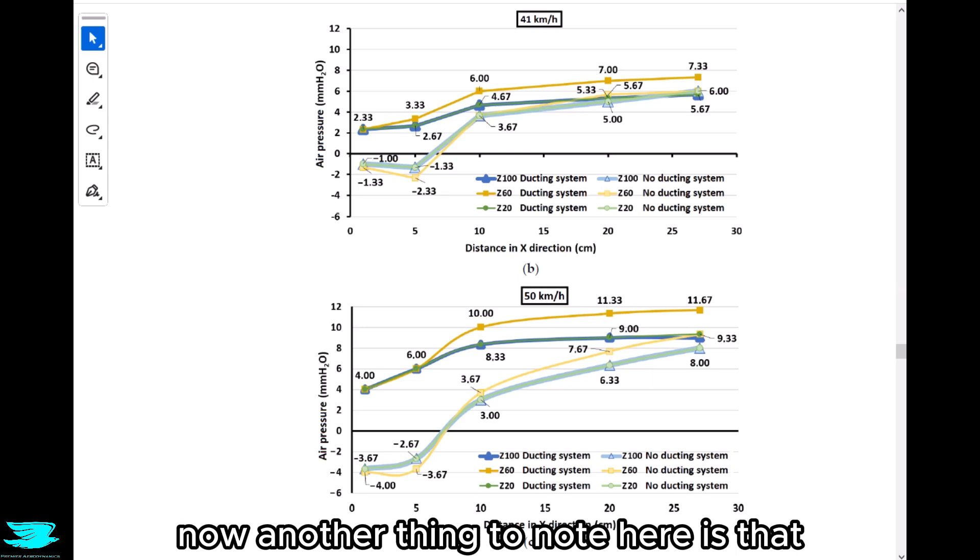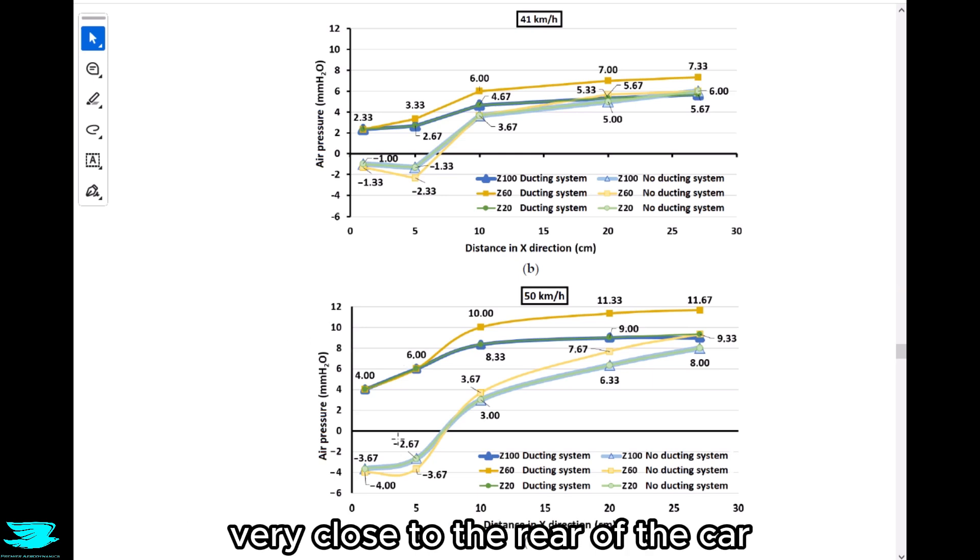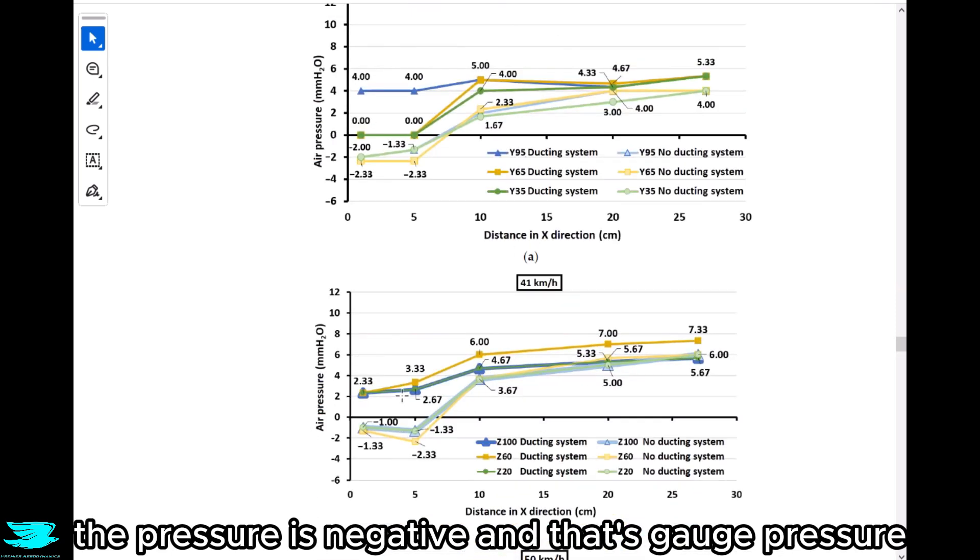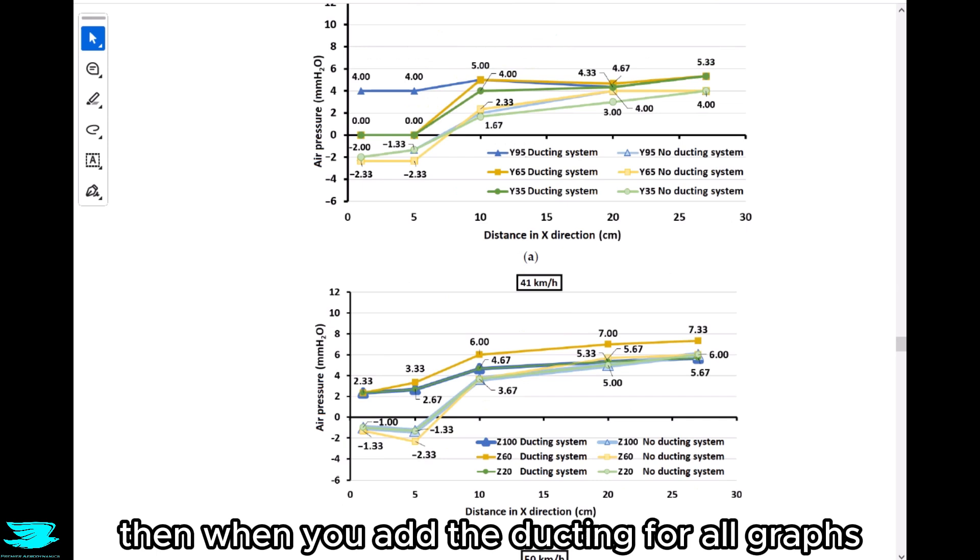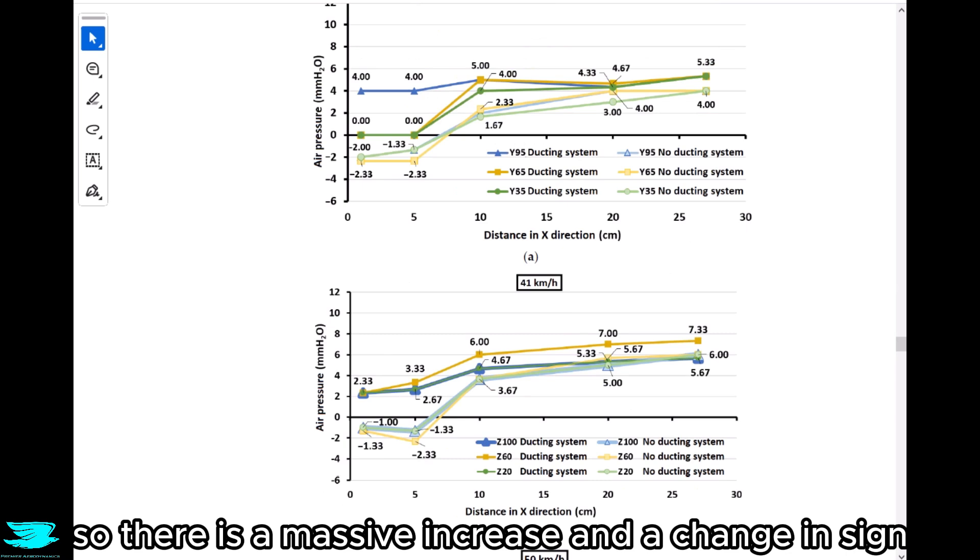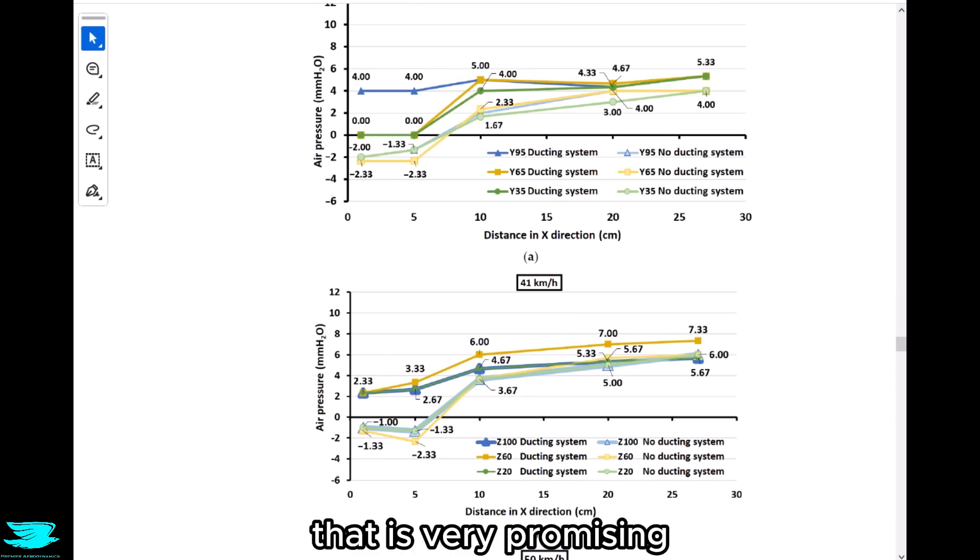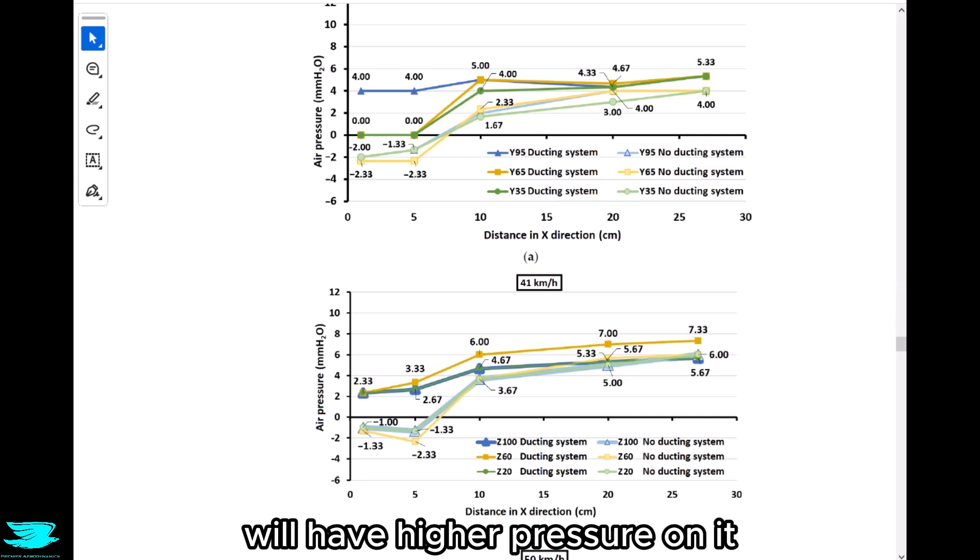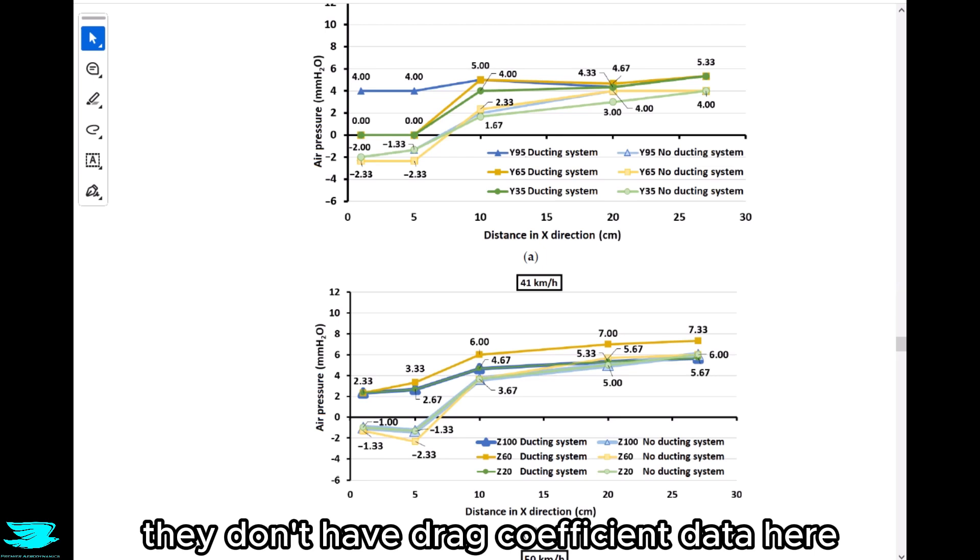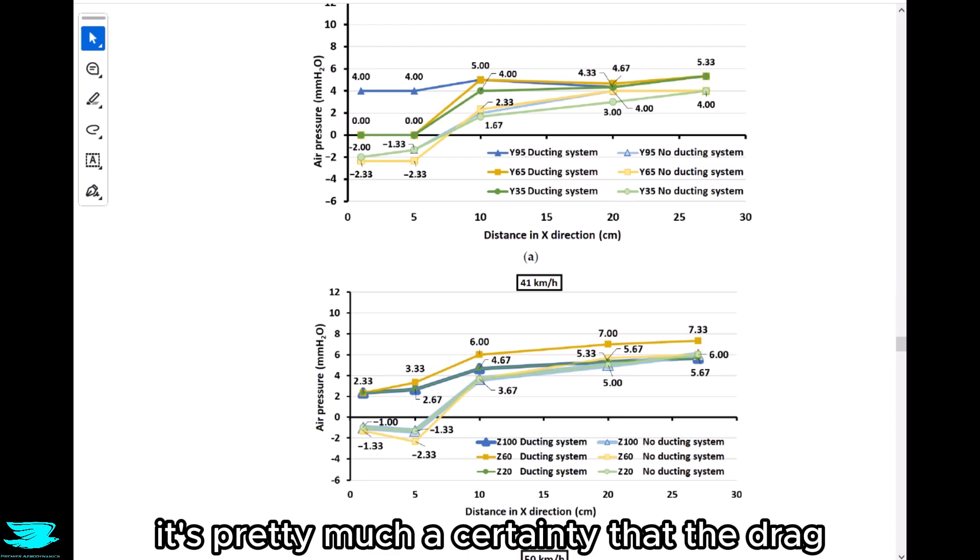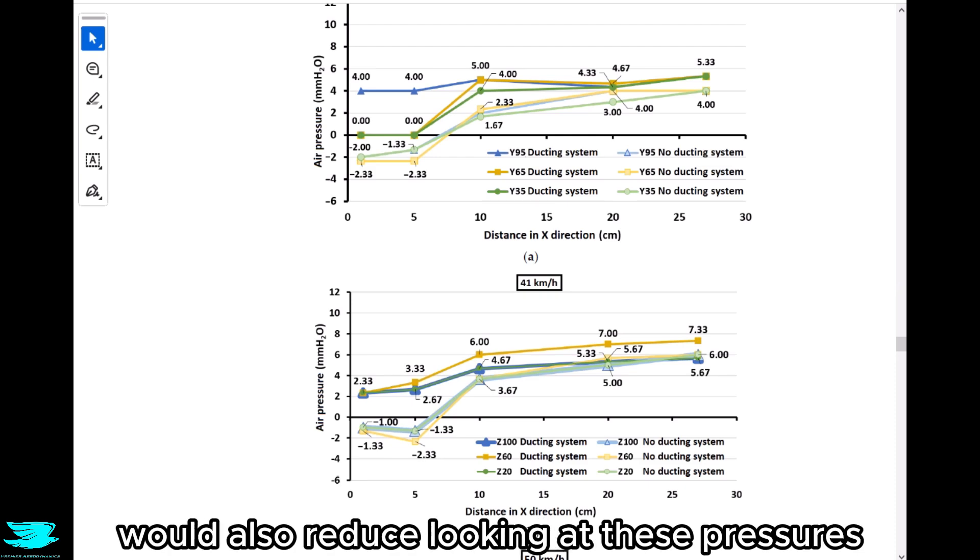Another thing to note here is that very close to the rear of the car, like one centimeter away, without the ducting the pressure is negative, and that's gauge pressure. Then when you add the ducting for all graphs we see, the pressure becomes either zero or positive. So there is a massive increase and a change in sign. That is very promising because that is very strong evidence that the pressure on the rear face of the car will have higher pressure on it and will then reduce the drag. Unfortunately they don't have drag coefficient data here, but it would be really interesting to see what would happen. I think it's pretty much a certainty that the drag would also reduce looking at these pressures.